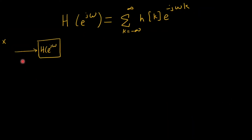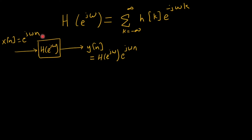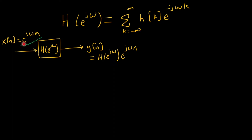Considering a system with frequency response h of e j omega, giving exponential input e to the power j omega n yields the eigenfunction e j omega n times the eigenvalue h of e j omega at the output. Importantly, this neat expression is not generic — if the input is not a complex exponential, one must resort back to the convolution sum. The eigenvalue times eigenfunction result comes specifically from the complex exponential input.